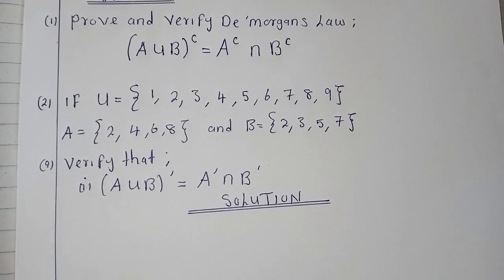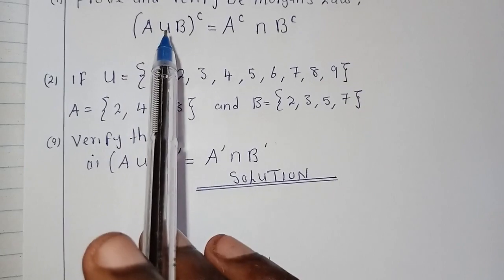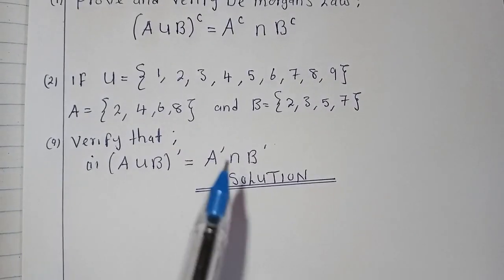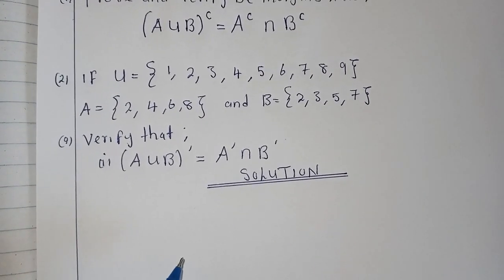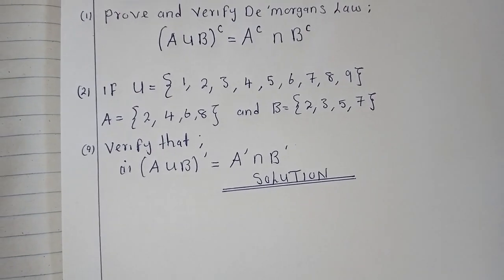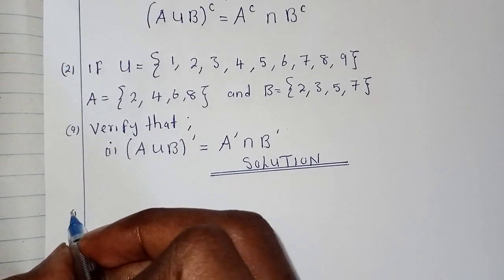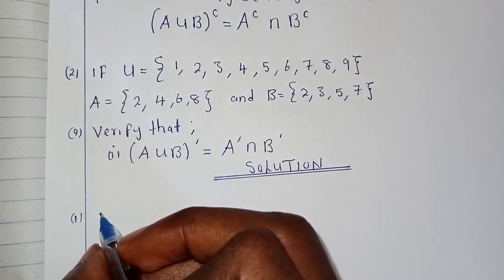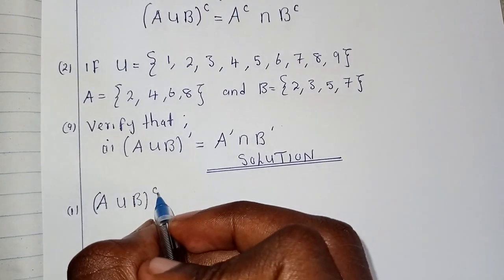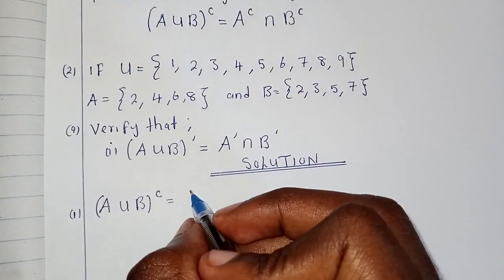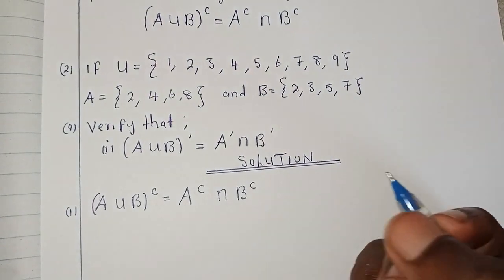Proving De Morgan's Law is about showing that what you have on the left-hand side and on the right-hand side are equal, using algebraic principles of sets. So we have (A union B) complement equal to A complement intersection B complement.